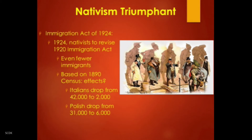For example, for Italians, using the 1890 census instead of 1920 would lower their annual quota from 42,000 to 2,000. For the Polish, the number would drop from 31,000 to 6,000. So we see this dramatic decline as it applied to the new immigrants, depending on which census was used.